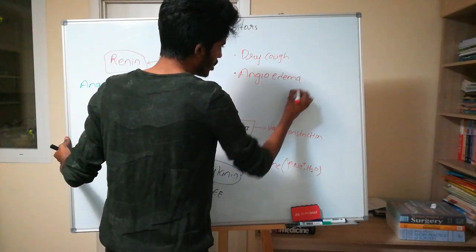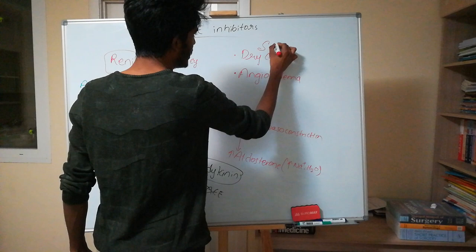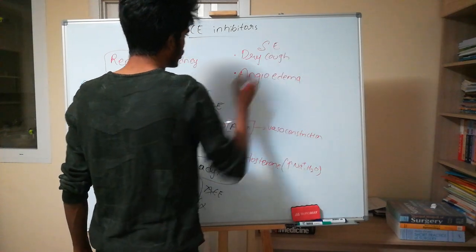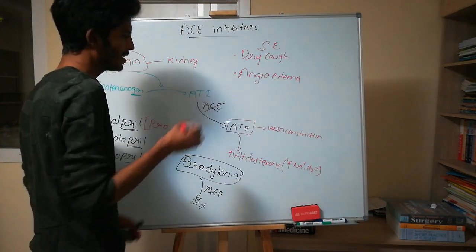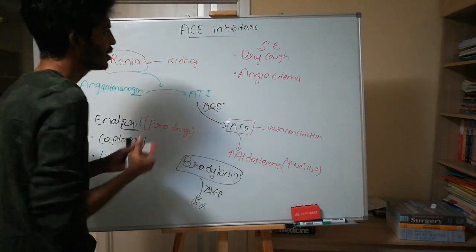Additionally, since bradykinin is an inflammatory mediator and also has an effect on blood vessels, it can cause angioedema. So dry cough and angioedema are the key side effects caused by ACE inhibitors.